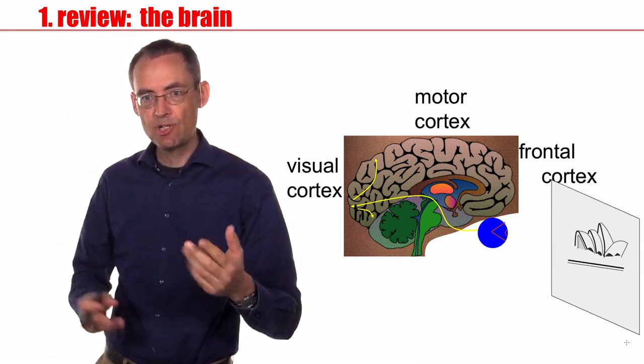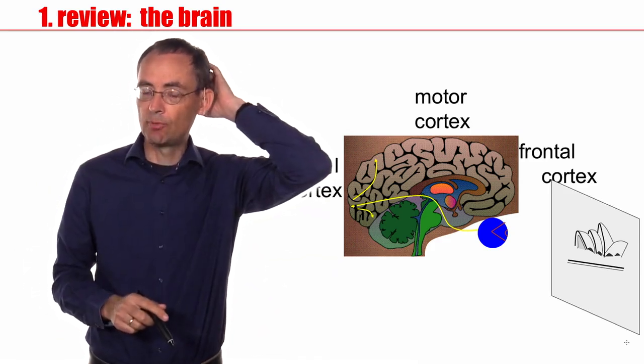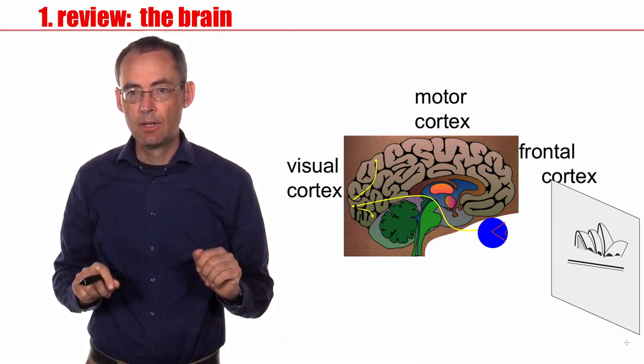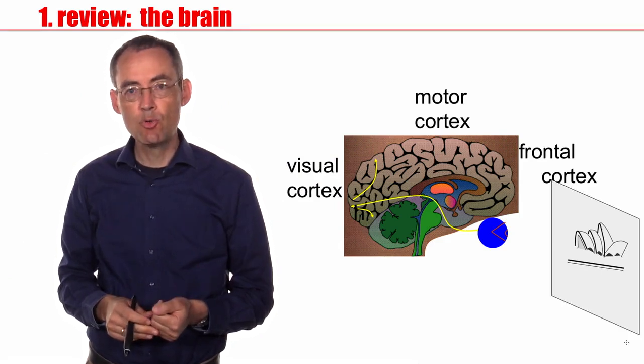Suppose you watch a movie, so information would enter through the eyes, go to the back of the head in an area that's called visual cortex, and from there it would spread out to other areas. Now this is a coarse description of the brain. You can also zoom in.